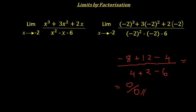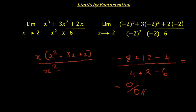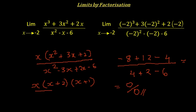Let's factorize this expression. There is an x common across all terms in the numerator, so we take x common and what is left is x² + 3x + 2. In the denominator, x² - x - 6 can be written as x² - 3x + 2x - 6. Doing a further sub-factorization, the numerator becomes x(x + 2)(x + 1), and the denominator becomes (x + 2)(x - 3).